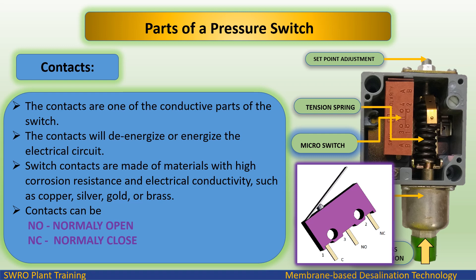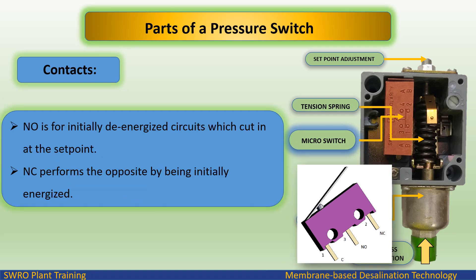Contacts can be NO (normally open) or NC (normally closed). NO is for initially de-energized circuits which cut in at the set point. NC performs the opposite by being initially energized.